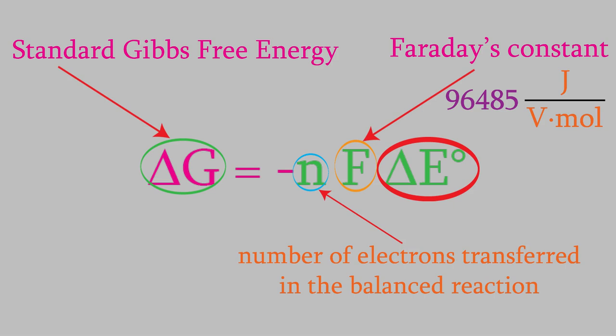Notice that this equation has a negative number on the right side. Since delta G is negative when a reaction is spontaneous, this tells us that the larger the voltage is, the more spontaneous the reaction will be.